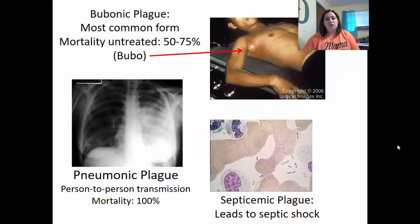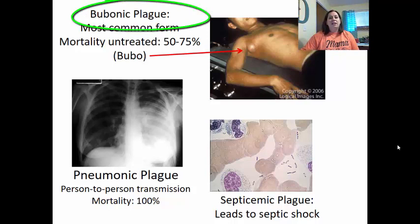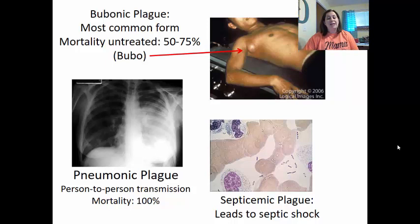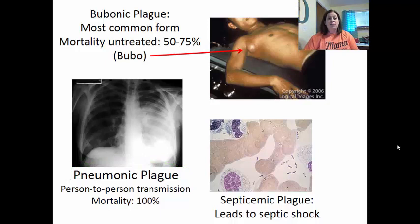Bubonic plague is the most common form, accounting for 80 to 95% of plague cases. The untreated mortality rate is 50 to 75%. It creates swellings in the lymph nodes called buboes, commonly found in the armpit area. Pneumonic plague is transmitted person to person with a 100% mortality rate — there are only 12 to 15 hours from fever onset to fight it, which is why treatment usually doesn't happen in time. Septicemic plague can lead to septic shock and can also progress into pneumonic plague.